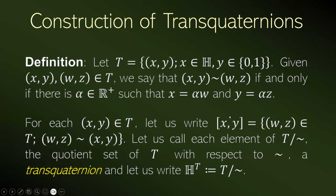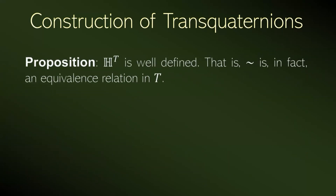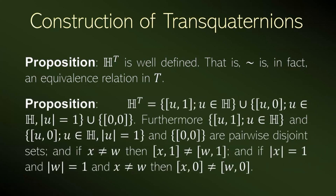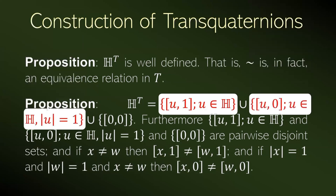We have that the set of transquaternions is well defined, meaning that this relation is in fact an equivalence relation. And we can see that the set of all classes can be split into three kinds of classes: first, the class where the second coordinate is 1; the class where the second coordinate is 0 but the first coordinate has modulus or norm 1; and the only class of (0, 0).